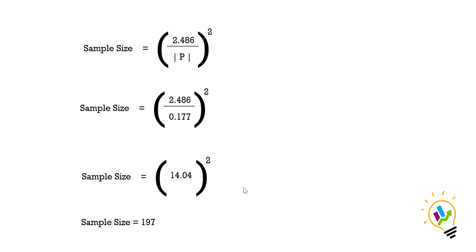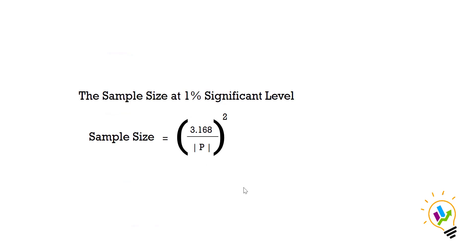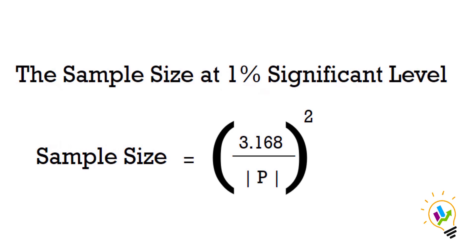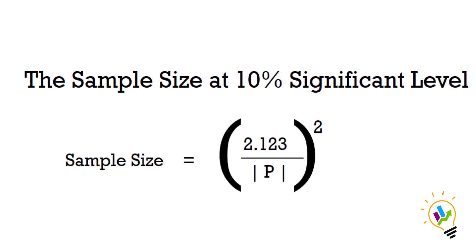If the significance level is 1%, we use the formula 3.168 divided by modulus of minimum path coefficient whole square. And if it is a 10% significance level, then 2.123 divided by modulus of path coefficient whole square.